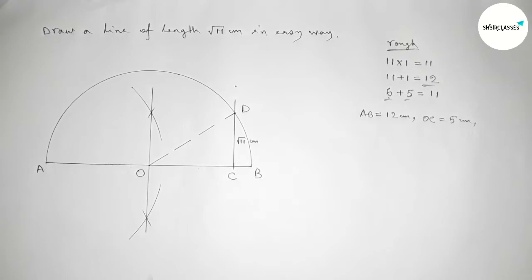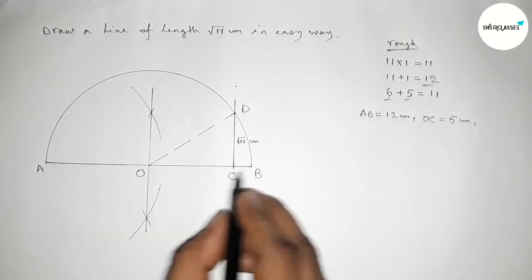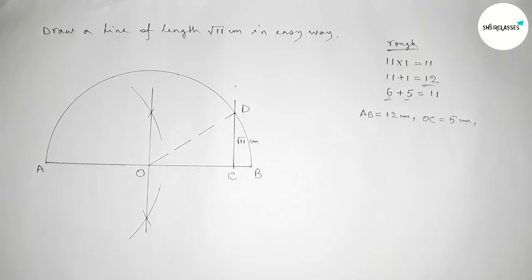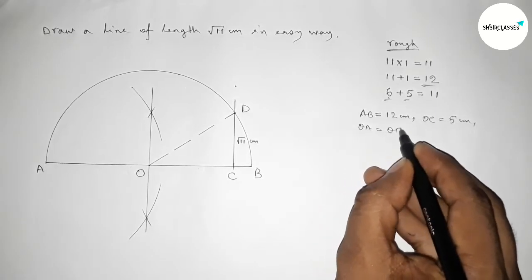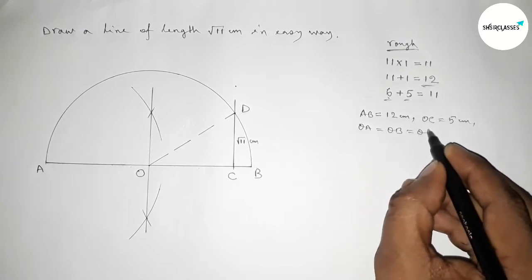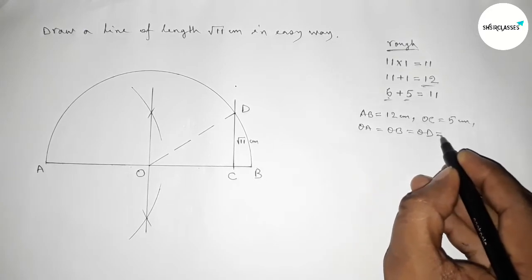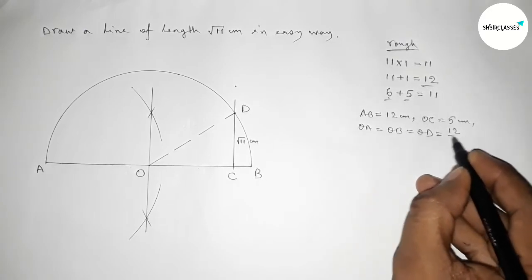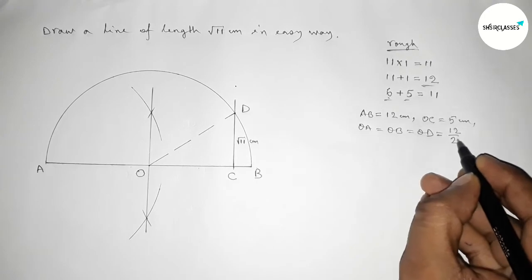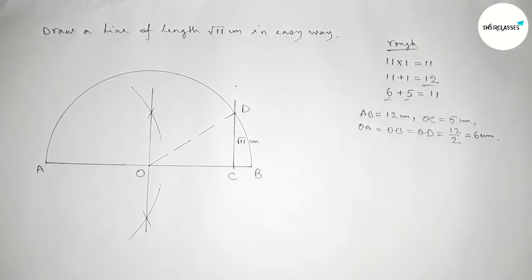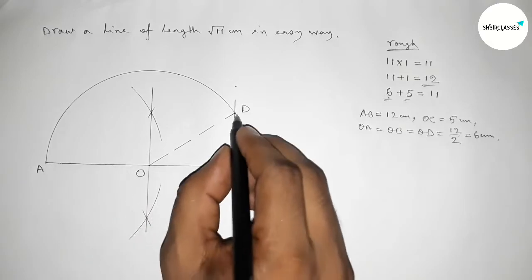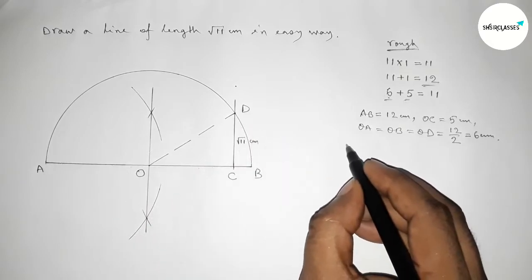Now the lengths OA, OB, and OD are the radius of the semicircle, so obviously the lengths are equal. So OA, OB, and OD equals to 12 by 2, which is 6 centimeter. Now from right angle triangle OCD,